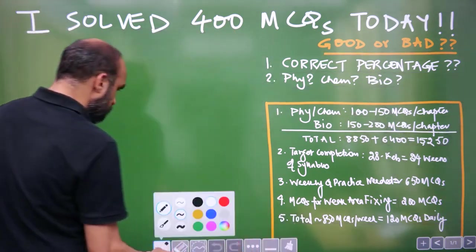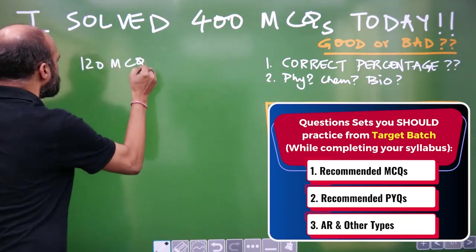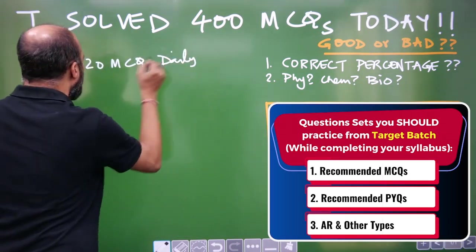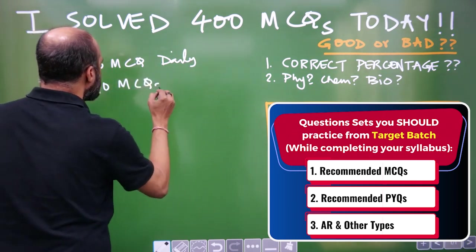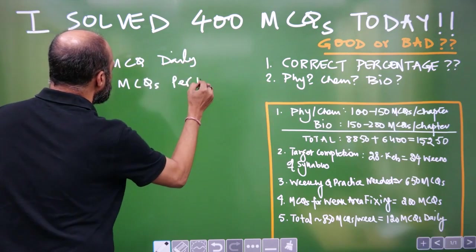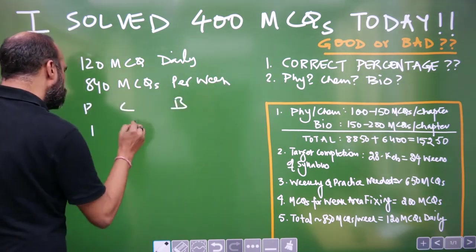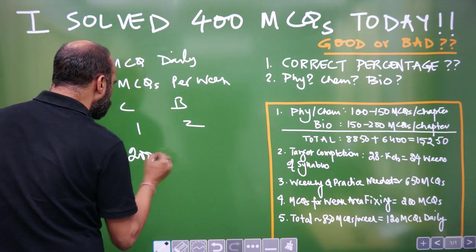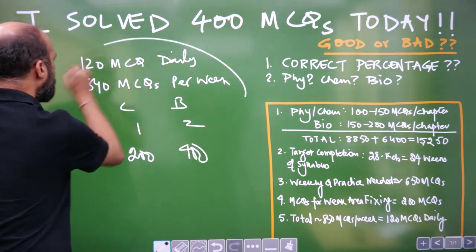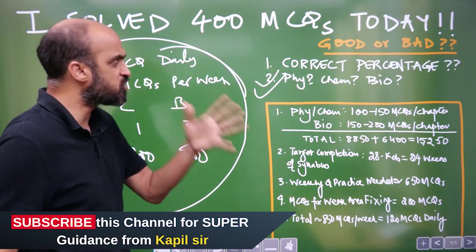And let me tell you again, what does that mean? 120 MCQs daily or let's say 840 MCQs per week. Right? So, physics, chemistry, bio, I said 1, 1, 2 ratio. So, approximately 200, 200, 400. This is enough, guys. This balance has to be maintained. This mindless practice has to stop.